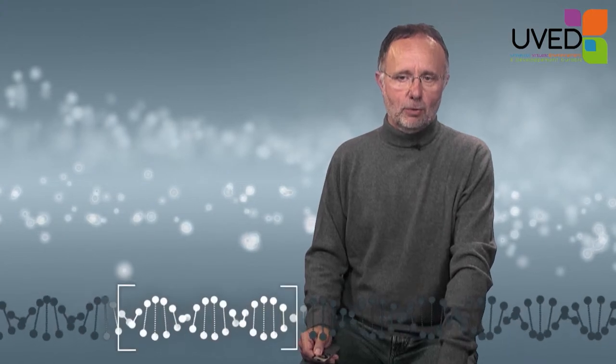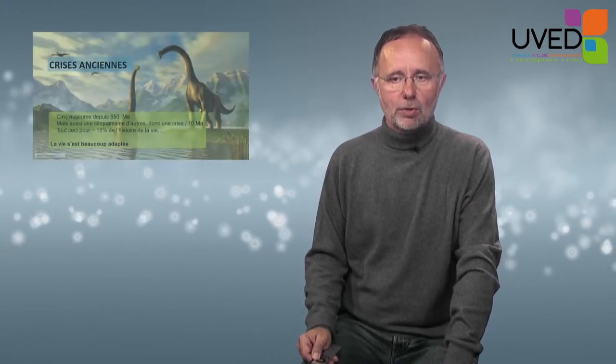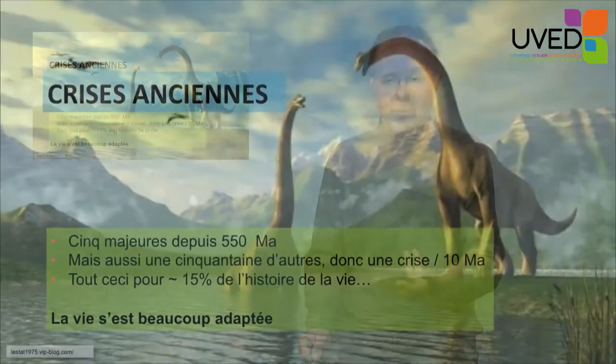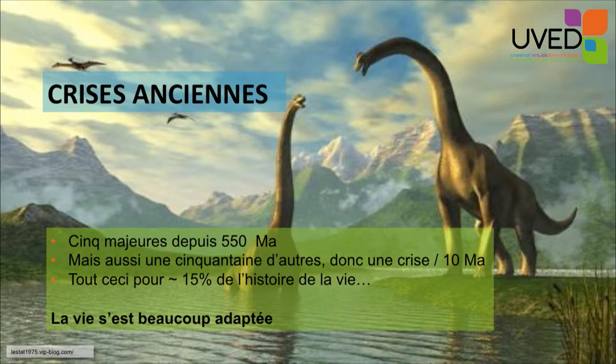I'm going to tell you about ancient crises that have affected the biosphere for many million years — 550 million years to be exact. Over that time, we've had five major crises and about 50 minor crises, one every 10 million years. This covers 15% of the history of life, because 550 million years only represents 15% of the history of life.